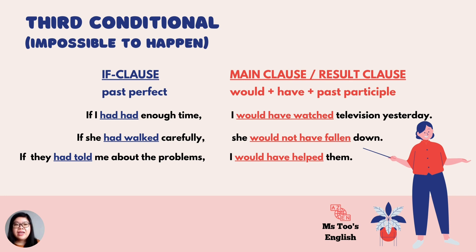The last sentence: if they had told me about the problems, I would have helped them. But in actual fact, they didn't tell me the problem, and maybe this problem has already been solved. So there's something to do with something that is impossible to happen — that is when we use third conditional, when we talk about something already in the past and use if to talk about something that is impossible to happen.